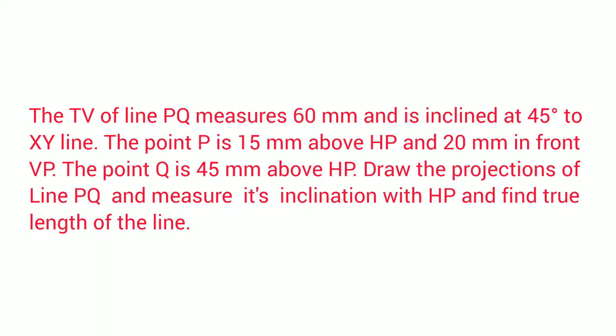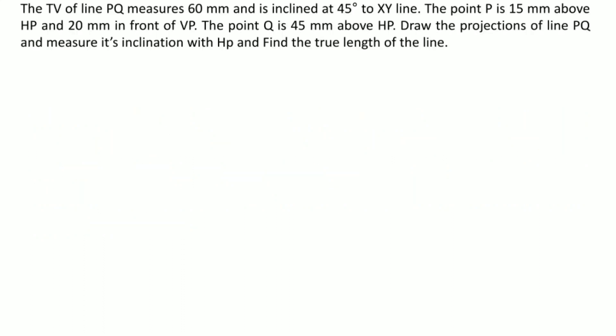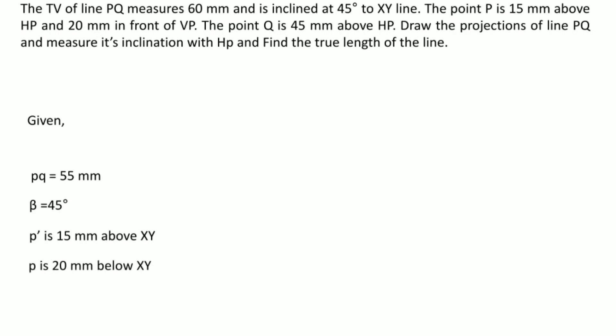We will try to get this data in terms of our notations. Line PQ in top view equals 55 mm, and beta equals 45 degrees, which line PQ makes with the XY line. P-dash is given 15 mm above HP, so it will come 15 mm above XY. It is also given 20 mm in front of the vertical plane, so its top view — that is, point P — will come 20 mm below the XY line.